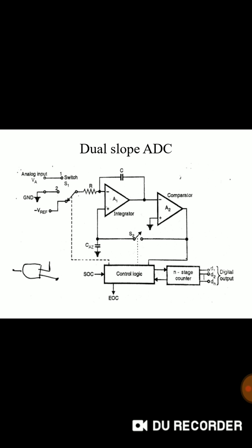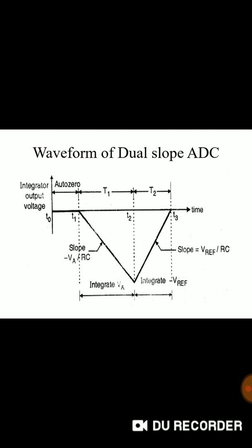The final one is dual slope ADC. Integrator and comparator are cascaded. Input will be given through switches ground and minus V reference values. Control logic that is SOC, EOC. Counter is given. These are waveforms for dual slope ADC.